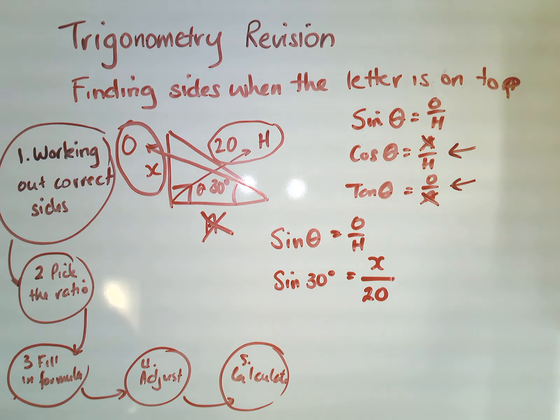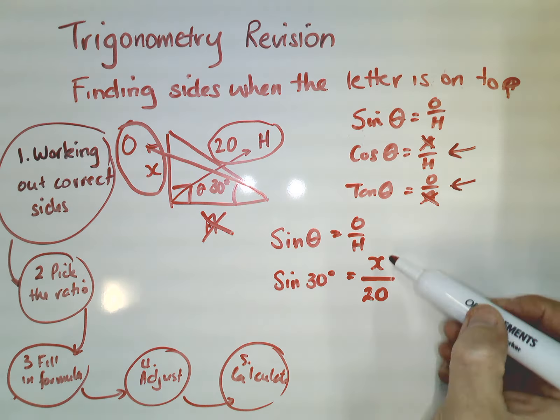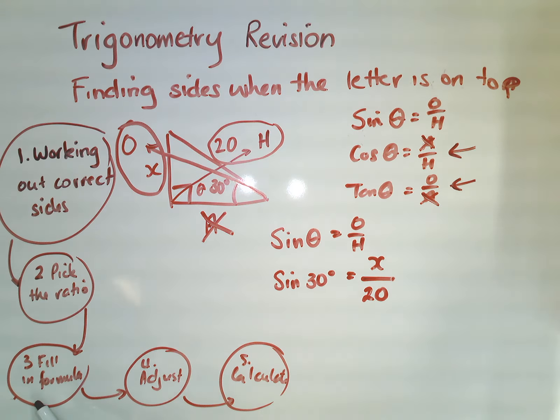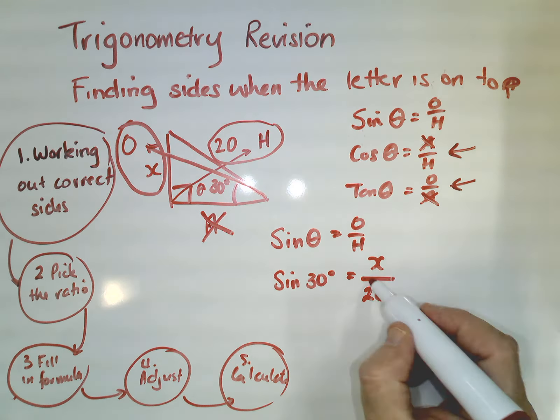And this is what I mean by finding sides when the letter is on top. The letter on top is here. So I've picked the ratio and I've filled in the formula, and now I've just got to go to this step: adjust. And this is probably where in trigonometry most of our work is mathematically anyway.